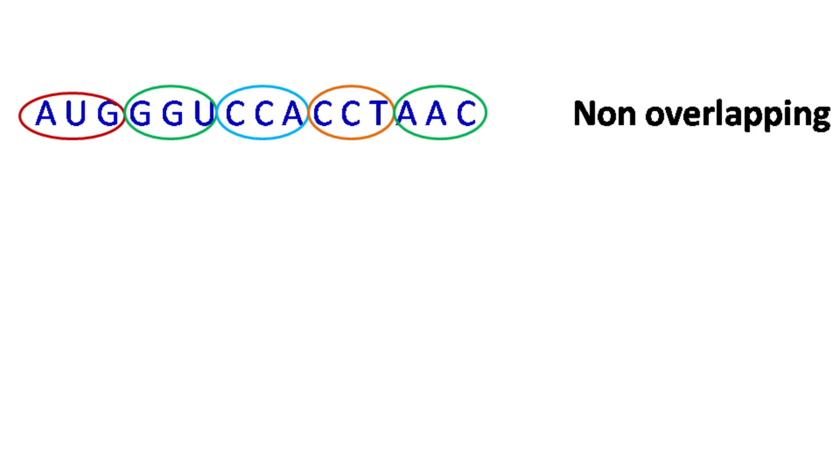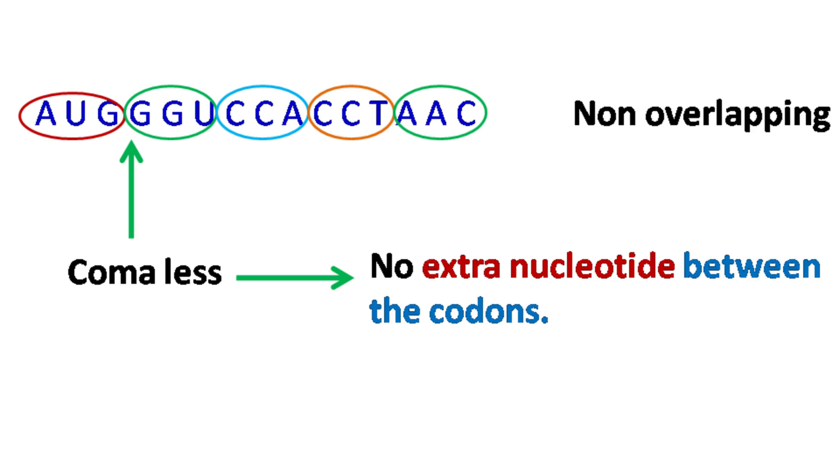The genetic code is comma-less, which means there is no extra nucleotide between the codons.